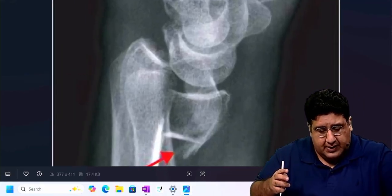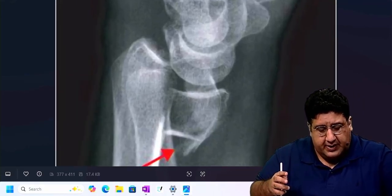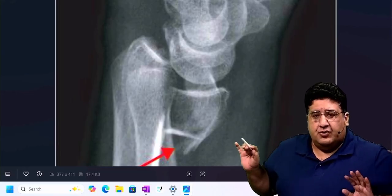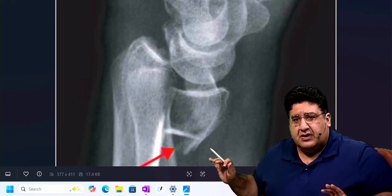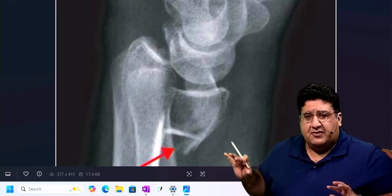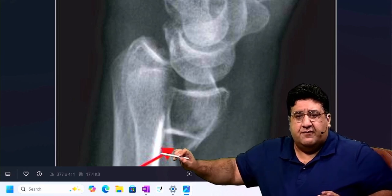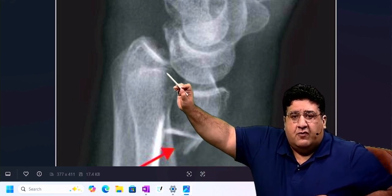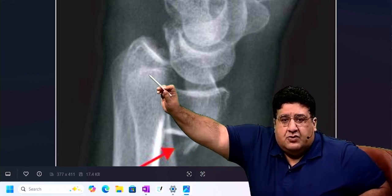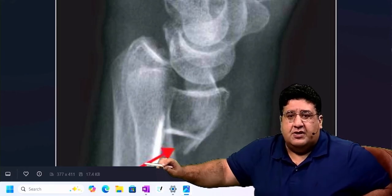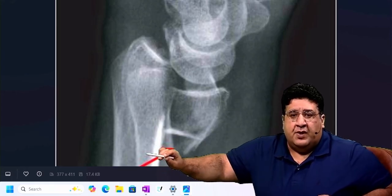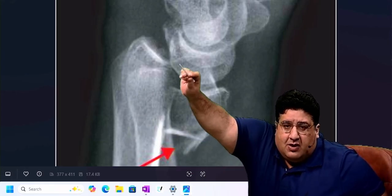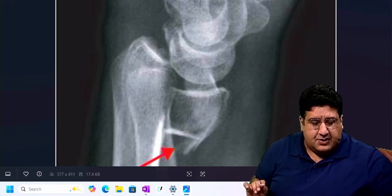So let us try to identify the fracture here. First of all, I'm sure you can see this is a lateral view x-ray, where you can see there is a small shadow of the ulna. This overlapping shadow of the ulna, you can just ignore. What you see primarily on a larger basis is basically the radius.